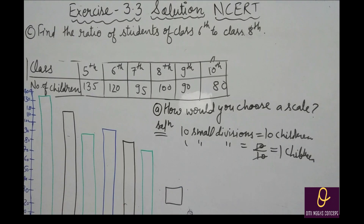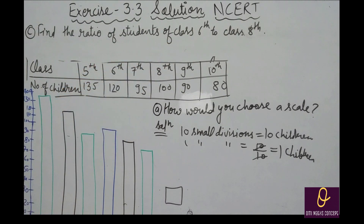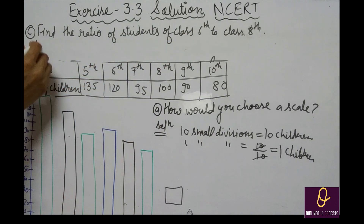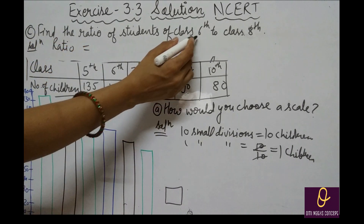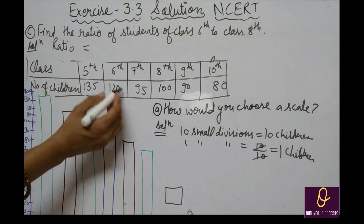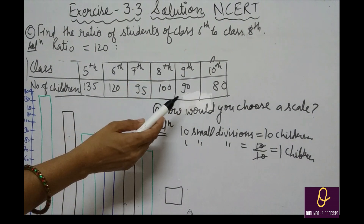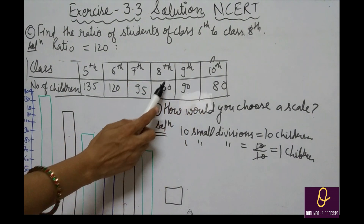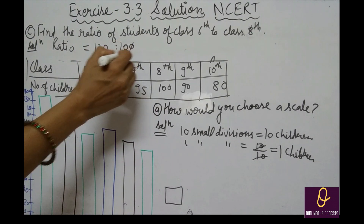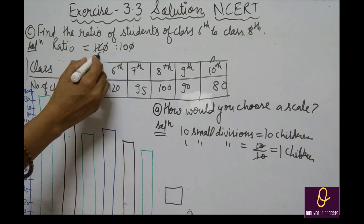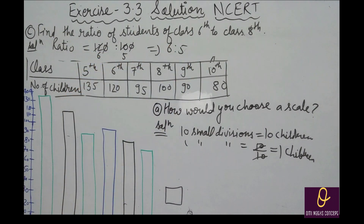Next — C part: find the ratio of students of class 6th to class 8th. Number of children in class 6th = 120, number of students in class 8th = 100. Ratio = 120:100. Lowest form: 6:5. This is your answer.